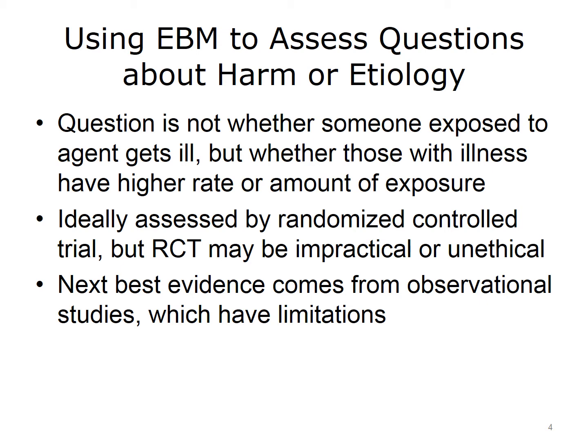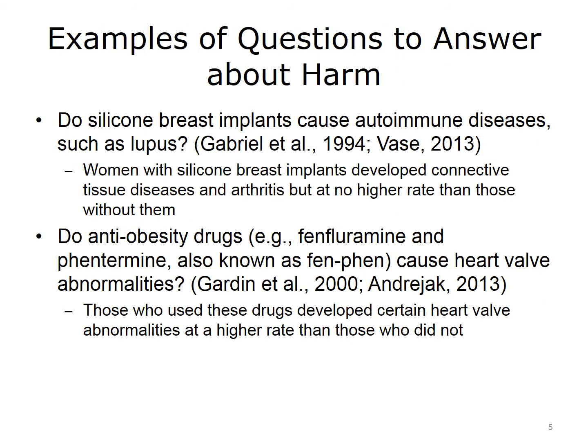We need other kinds of study designs that enable us to detect whether something causes harm. We have to go down to the next best level of evidence, which is observational studies. However, we need to be careful in how we interpret observational studies to ensure that they answer our questions. Here are some examples of questions that have come up in the news media about whether things cause harm.